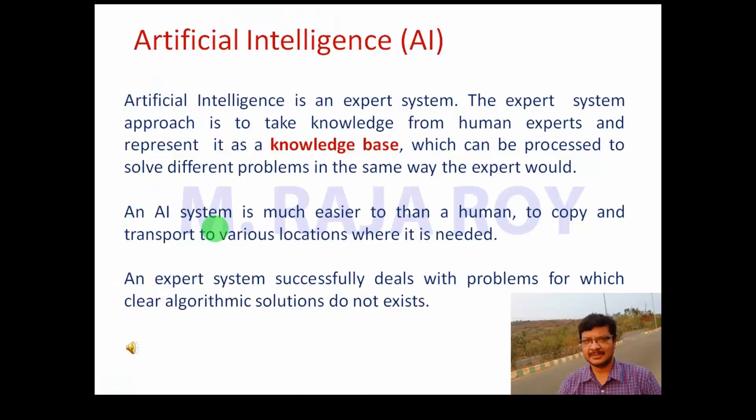Artificial Intelligence. Artificial intelligence is an expert system. The expert system approach is to take knowledge from human experts and represent it as a knowledge base, which can be processed to solve different problems in the same way the expert would. An AI system is much easier to copy and transport to various locations where it is needed. An expert system successfully deals with problems for which clear algorithmic solutions do not exist.